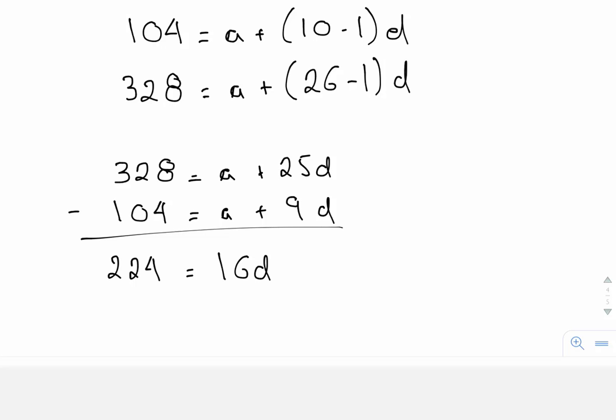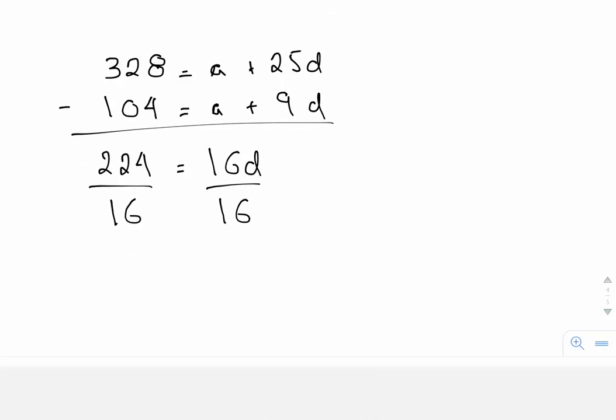And at this stage, I'm going to divide both sides by 16. So let's see what we get here. So 16 over here and 16 over here. 224 divided by 16 gives me 14. And that's my D value.